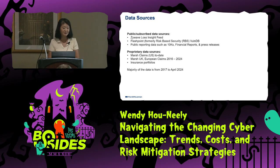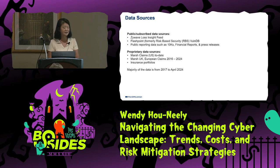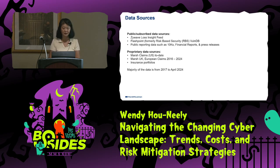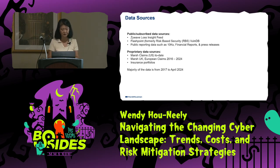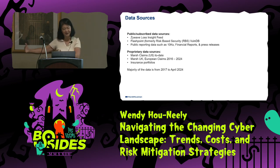The data sources for this presentation include Cyberlaw loss data, Flashpoint, public reporting such as 10-Ks, and some large losses from those filings. Also all the Marsh McLennan claims — Marsh is a US brokerage business — plus some UK and European claims, as well as the insurance portfolio. Marsh McLennan has a company called Guy Carpenter which does broking for all the reinsurance brokers, so those portfolio claims are also imported. The majority of data spans 2017 to 2024; for ransomware specifically, I start counting from 2019.